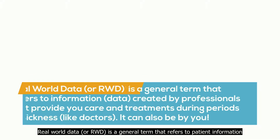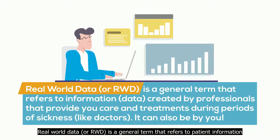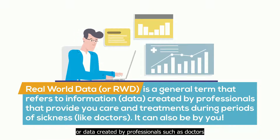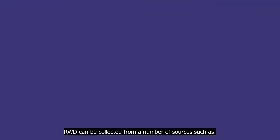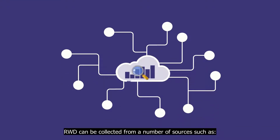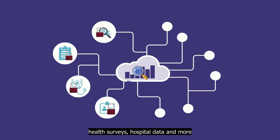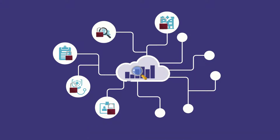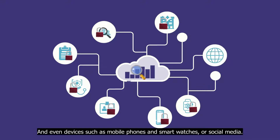Real-world data, or RWD, is a general term that refers to patient information or data created by professionals, such as doctors who provided care and treatments during periods of sickness, but it can also be you. RWD can be collected from a number of sources, such as your health records, insurance claims, product and disease registries, health surveys, hospital data, and more — and even devices such as mobile phones and smartwatches, or social media.